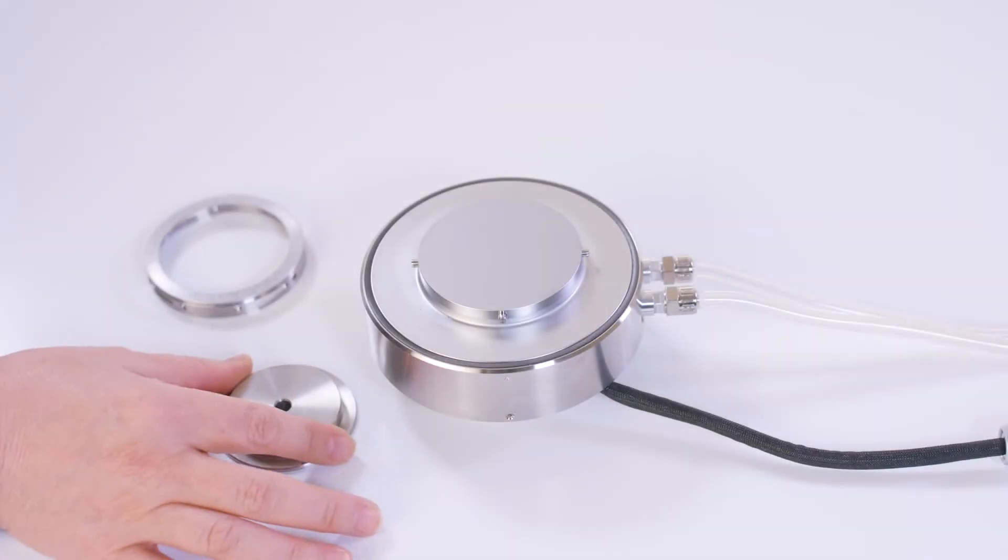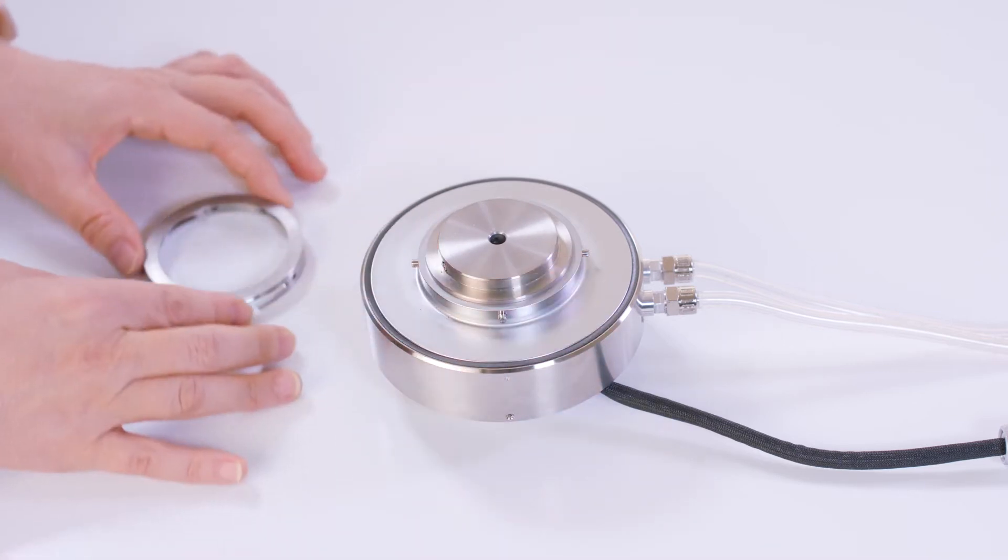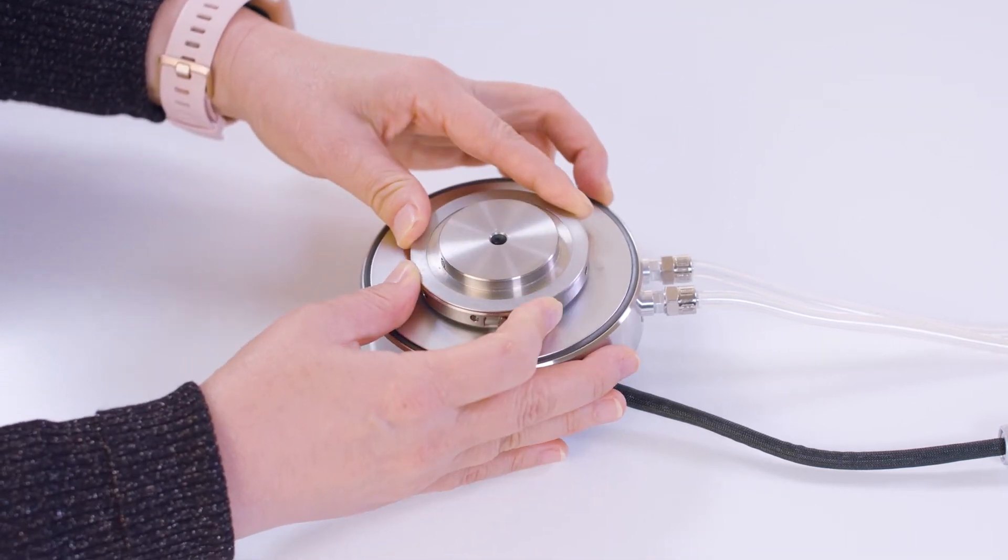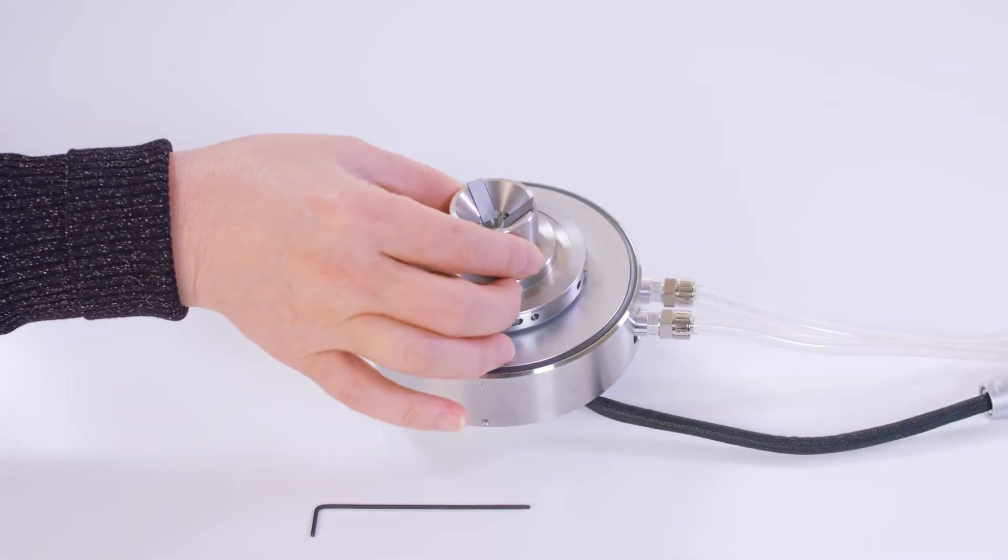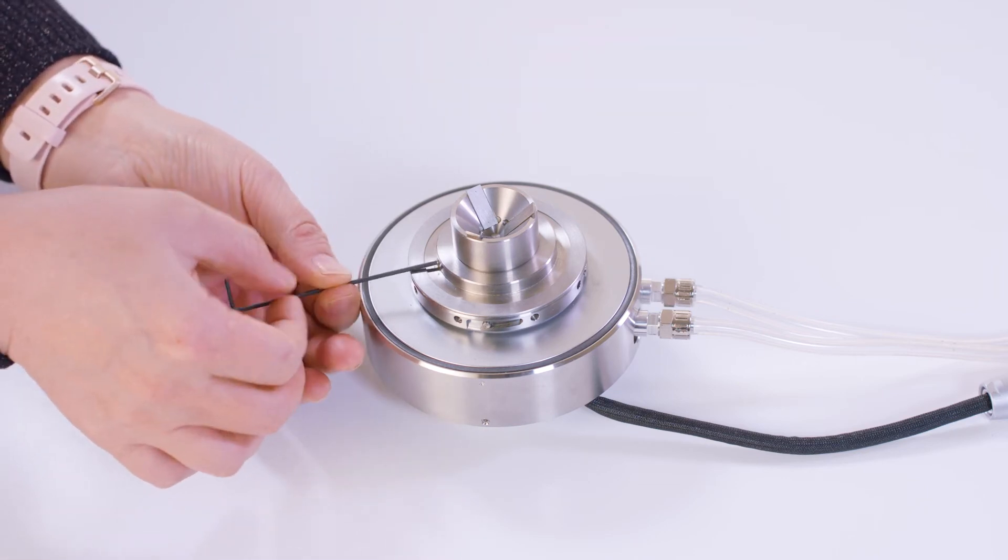If you are using the Peltier temperature control system, for advanced Peltier plate, you will need to attach this tribo-rheometry holder to the top of the Peltier plate first, and then attach this three-plates lower geometry. Tighten the screws on the side.